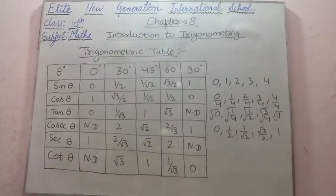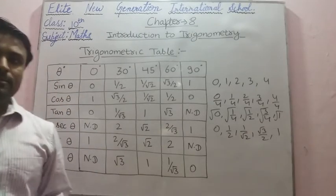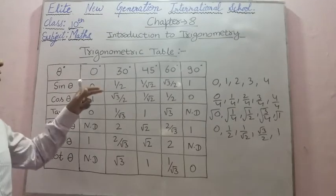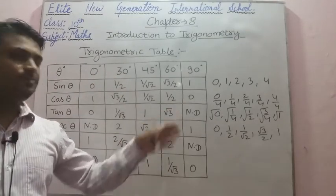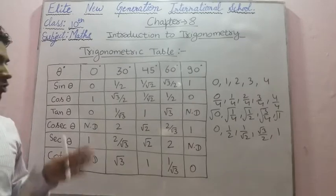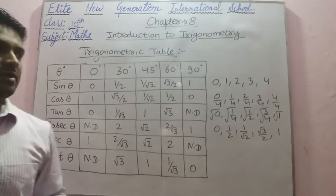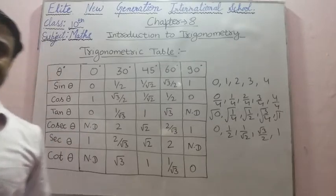In this way we can complete the trigonometric table. This table is very important because by knowing the values of these angles we can find the value for any given question. On the basis of this table we can start our next exercise, that is 8.2.